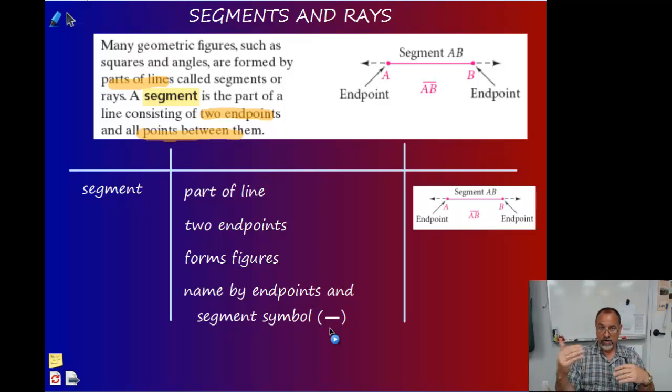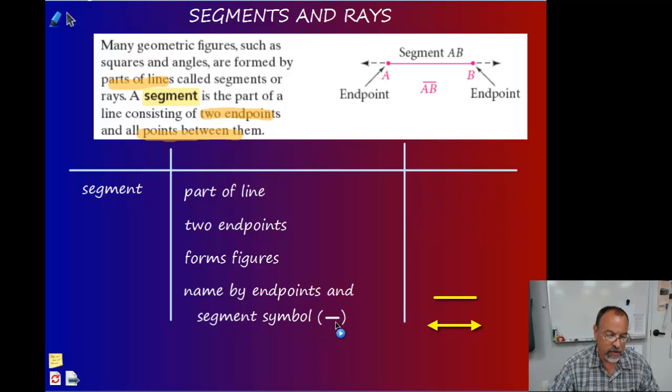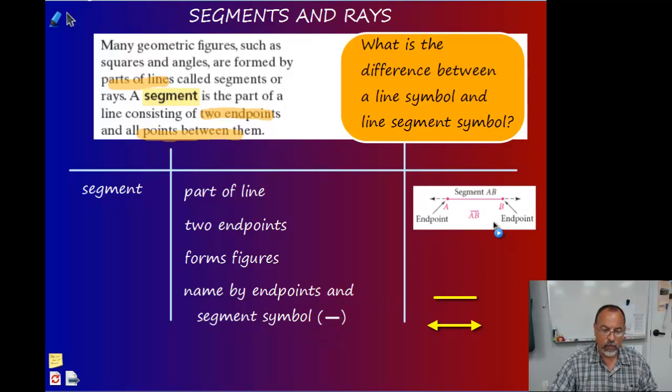The only way to know the difference is to use a different symbol. So for a line symbol, we use a line with two arrows on each end. Notice the segment symbol, it's different. What's the difference between the line symbol and the line segment symbol? Make sure you answer that, make sure that's in your notes.